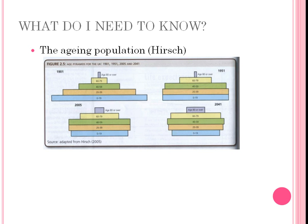Hirsch says this is the result of several factors: increased life expectancy with people living longer into old age, declining infant mortality rates so hardly anyone dies really early in life, and a decline in fertility, meaning fewer young people are being born in relation to the older people in the population.